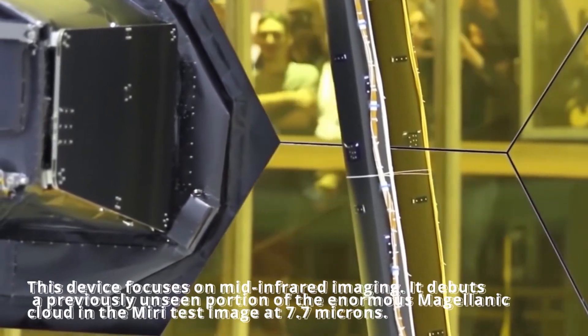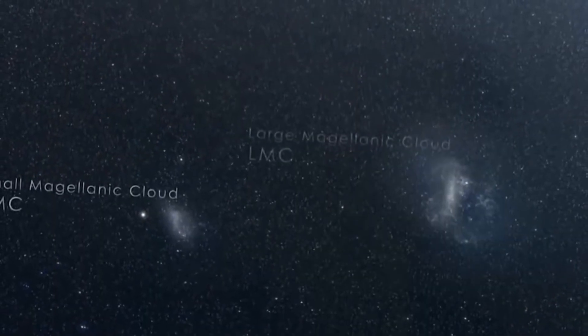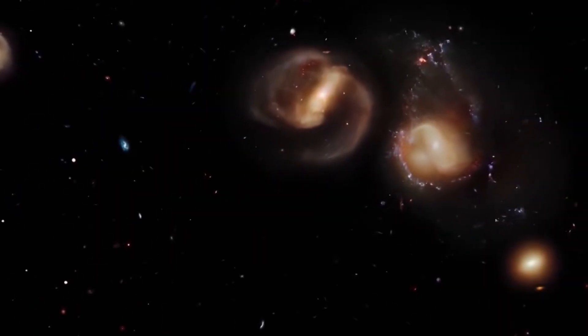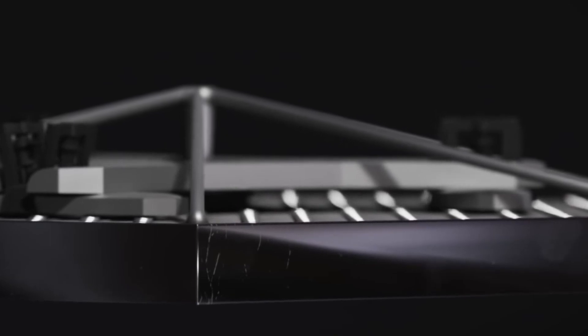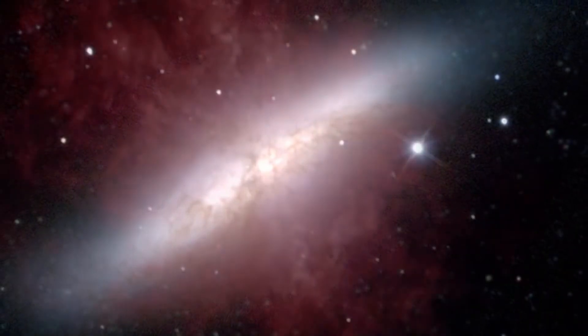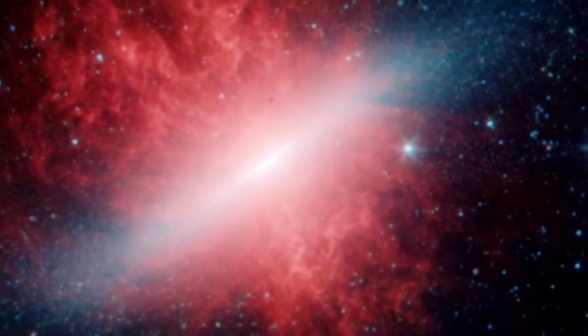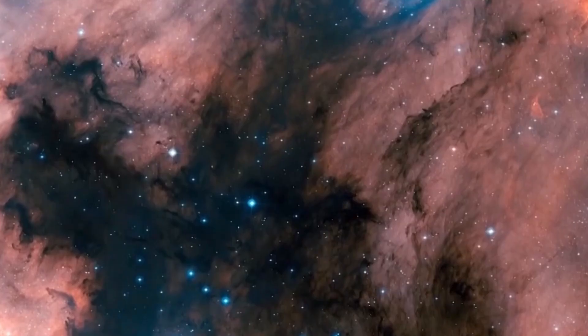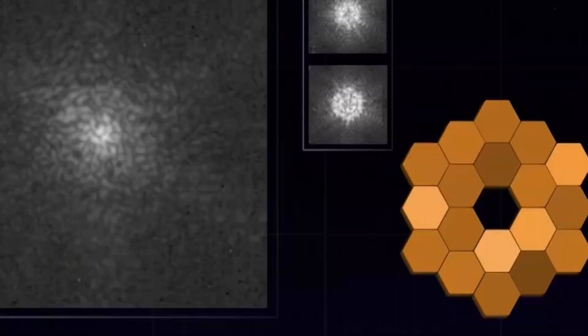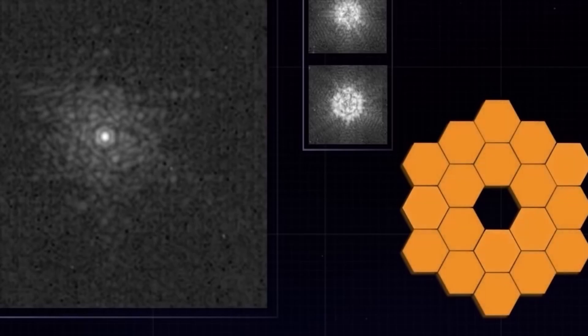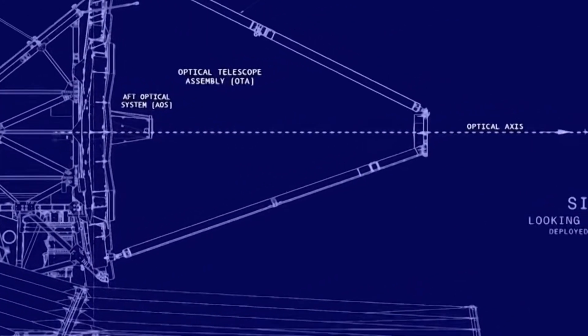The enormous Magellanic Cloud can be seen in the image thanks to the JWST's Mid-Infrared Instrument. This device focuses on mid-infrared imaging. It debuts a previously unseen portion of the enormous Magellanic Cloud in the Miri test image at 7.7 microns. Although the LMC is a small satellite galaxy of our Milky Way, it has strong star fields, making it a suitable field for testing Webb's next-generation capabilities. The image compares a zoomed-in portion of the Miri image with a previous photograph taken by NASA's Spitzer Space Telescope using an infrared array camera of the exact target location. Spitzer is no longer in operation, but it was one of the first to provide high-resolution photographs of the universe in the near and mid-infrared. JWST employed its primary mirror with its improved detectors to give researchers a considerably more acceptable image of the infrared sky, suggesting future advancements in deep space astronomy.